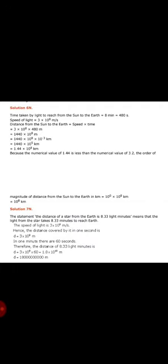Next: time taken by light to reach from the Sun to Earth is 8 minutes, that is 480 seconds. Speed of light is 3 × 10 raise to 8 m/s. Using distance = speed × time: 3 × 10 raise to 8 × 480 = 1.44 × 10 raise to 11 meters. To convert to kilometers, divide by 1000. The next part on magnitude is not there for you — you can ignore it.